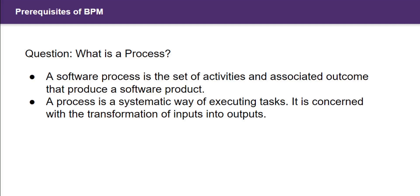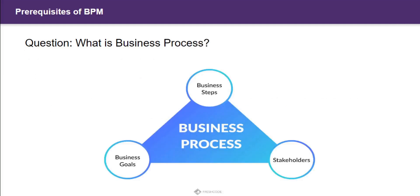Now we understand what a process is. A business process — suppose you are going to perform a task. What all tasks are we going to work on, and what people are we going to hire? Everything required to complete that particular task — be it management skills or other skills — will be included in that business process.